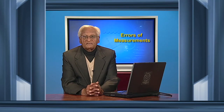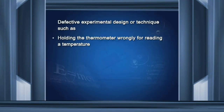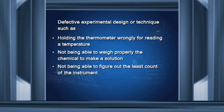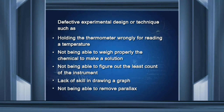The second category of systematic errors involves defective experimental design or techniques, such as holding the thermometer wrongly when reading a temperature, not being able to weigh properly the chemical to make a solution, not being able to figure out the least count of the instrument, lack of skill in drawing a graph, and not being able to remove parallax in optical experiments.